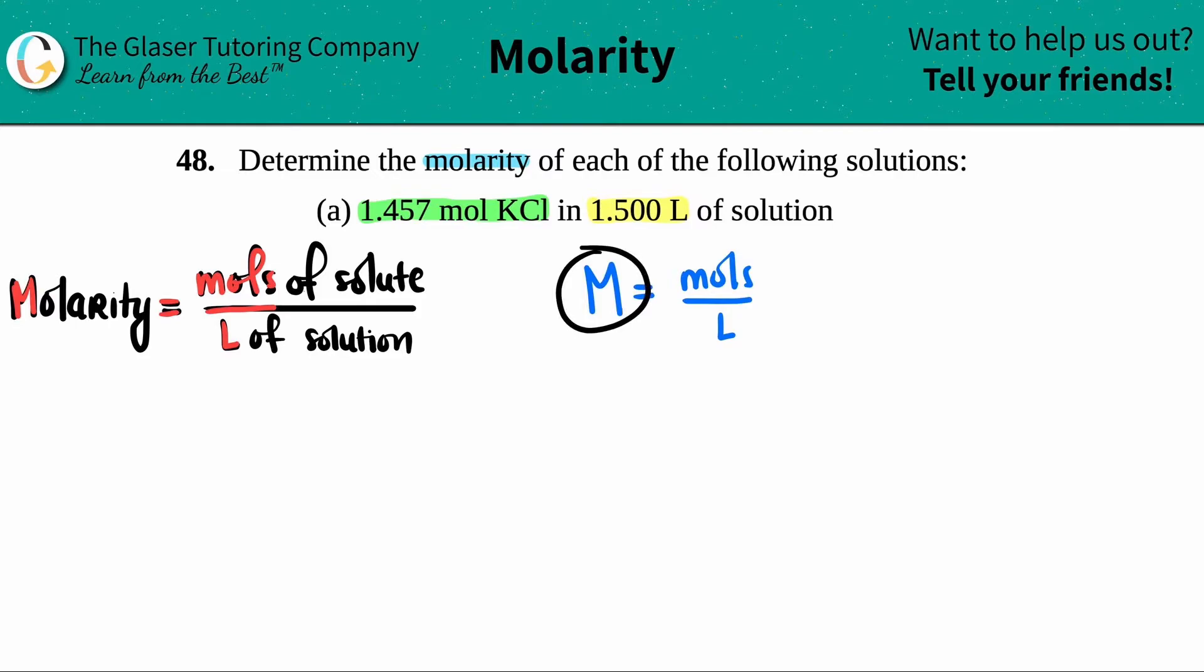Let's see, we want to find the molarity, which means that we don't know it, so we should know these two guys. Do we know the moles? Yeah, they told us we had 1.457 moles, right? So this number would be 1.457.